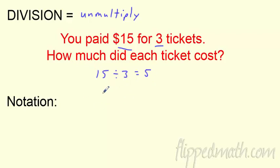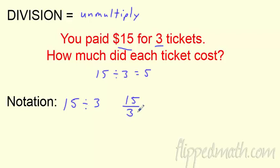What's the notation for division? The main one you've probably been using is 15 ÷ 3. We've also been using the fraction bar: 15 over 3. Sometimes you'll see a backslash, like on a calculator or computer. We're really going to phase out the division sign and move to the fraction bar.